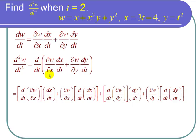Applying the product rule: take the derivative of the first term, d over dt of del w del x, times the second, plus the first times the derivative of the second. Then do the same for the next term: derivative of del w over del y times dy dt, plus the first times the derivative of the second.